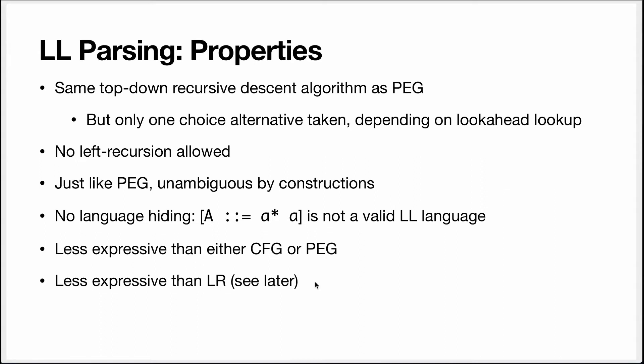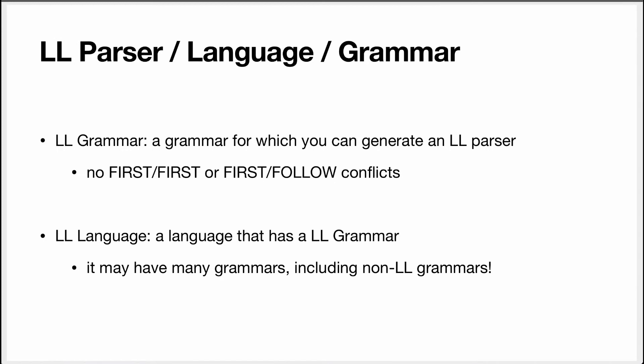I want to clarify the vocabulary: LL grammar, LL language, LL parser — what do these mean? An LL grammar is a grammar for which you can generate an LL parser — if you give it to the LL parsing tool, you will not get any first-first or first-follow conflicts. An LL language is a language that has an LL grammar. A language is a set of sentences, and there might be multiple grammars defining the same language. Some of these grammars might not be LL grammars. To be an LL language, it suffices that at least one LL grammar for the language exists.